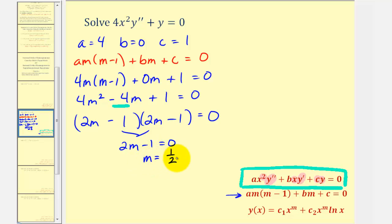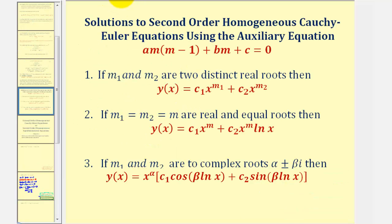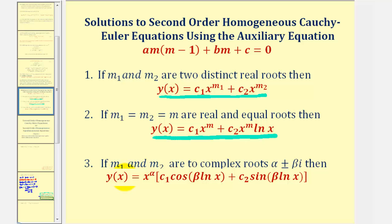Because we have two real equal roots to our auxiliary equation, the form of the general solution will be in this form here. Notice the second term has an extra factor of natural log x. For a quick review: if the auxiliary equation had two distinct real roots, the general solution takes one form; in our case, with two real equal roots, it takes a different form; and finally, if m sub one and m sub two are complex roots in the form alpha plus or minus beta i, the general solution takes a third form.